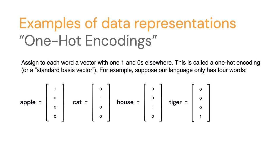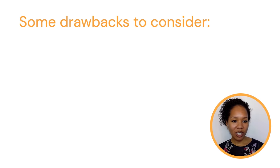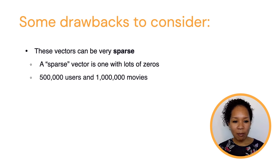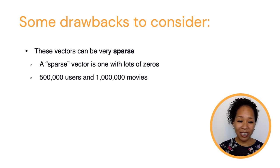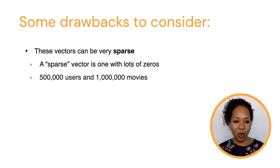You can imagine having tens of thousands of words rather than just four. Now you have vectors with lots and lots of zeros, except for one entry which is a one. This makes us think of some drawbacks to data representations. The first is sparsity — data representations can be very sparse, with lots and lots of zeros. We saw this with one-hot encodings. We can also think back to users and movies: maybe I have 500,000 users and a million movies. Probably not every user has watched every movie, so there are lots of unknown entries in my vectors — perhaps replaced with zeros.